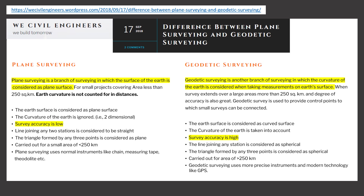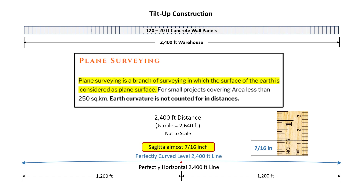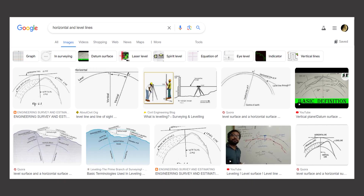So how we use the words level and horizontal really depends on the type of surveying that's done. On the left, plane surveying is a branch of surveying in which the surface of the Earth is considered as a plane surface, which would mean that level is also considered a plane surface, and the survey accuracy is low. But on the right, geodetic surveying is a branch of surveying in which the curvature of the Earth is considered when taking measurements on the Earth's surface, and the survey accuracy is high. Most construction surveys are going to be plane surveys because they just do not cover enough area where curvature is going to have an effect. But all one needs to do is Google 'horizontal and level lines' and click images — it's quite interesting that all the surveying and civil engineering websites show a level line as a curved surface.